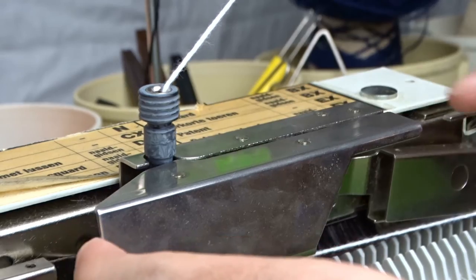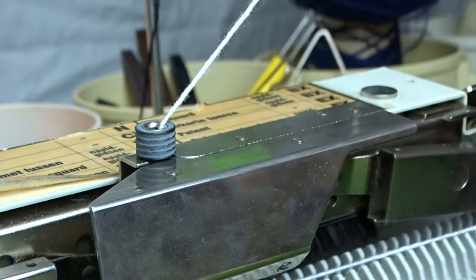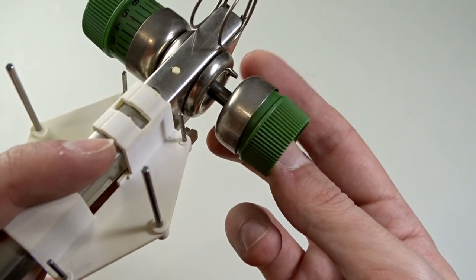If the machine does not knit, make sure you have installed the feeding eyelet correctly. And don't forget about the pin.